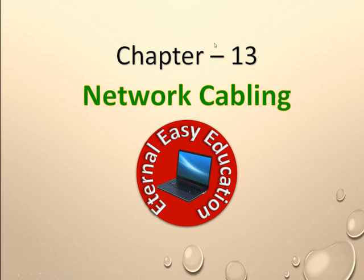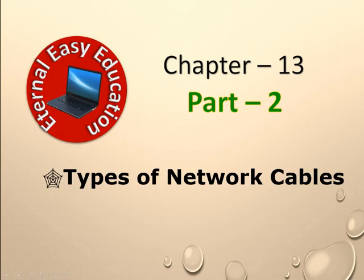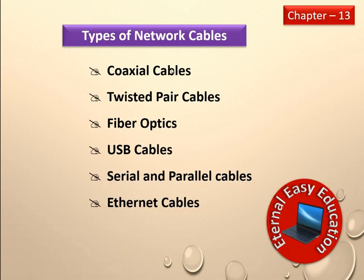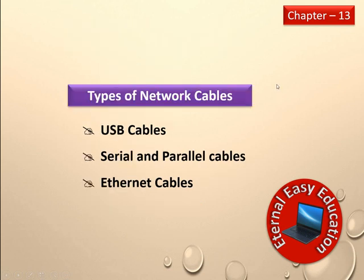Welcome to Eternal Easy Education. In this session you are going to learn Chapter 13: Network Cabling. There are six types of network cables: coaxial, twisted pair, fiber, USB, serial and parallel, and ethernet. In the previous video you learned coaxial, twisted pair, and fiber optics, so in this video you are going to learn USB cables, serial and parallel cables, and ethernet cables.